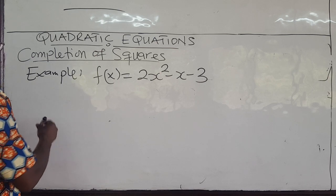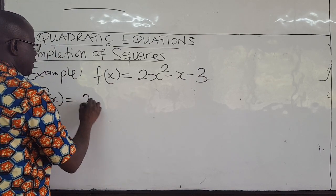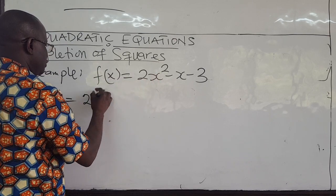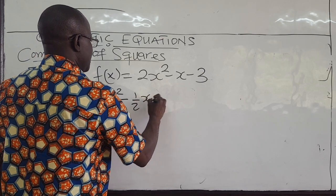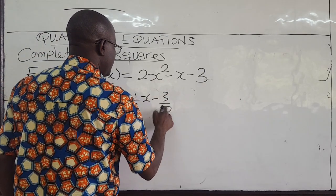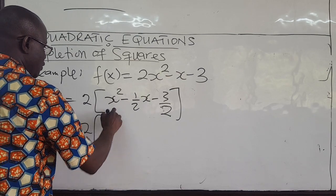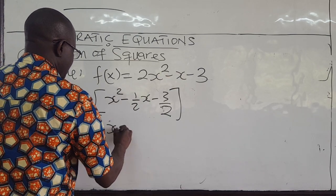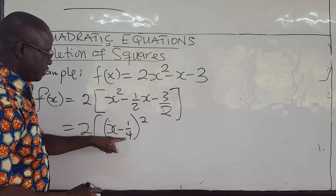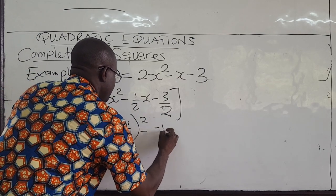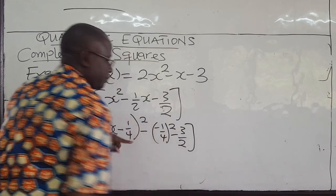Following the same procedure: we have 2 here, so we want the coefficient to be 1. Pull 2 out to get 2 times x squared minus half x minus 3 over 2. Now that the coefficient of x squared is 1, we complete the square: take x minus 1 over 4, all squared, and subtract the square of 1 over 4, then add negative 3 over 2.